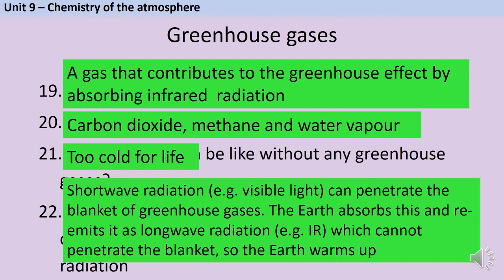Shortwave radiation, like visible light but also other shortwave radiation like ultraviolet light, can penetrate the blanket of greenhouse gases in the Earth's atmosphere. When that radiation reaches the Earth's surface, the Earth absorbs it and then re-emits it as longer wave radiation, including infrared radiation, but also things like radio waves and microwaves. That longer wave radiation is less able to penetrate the blanket of greenhouse gases, so a lot of it stays in the Earth's atmosphere rather than being given back out into space, and therefore the Earth ends up warming up.